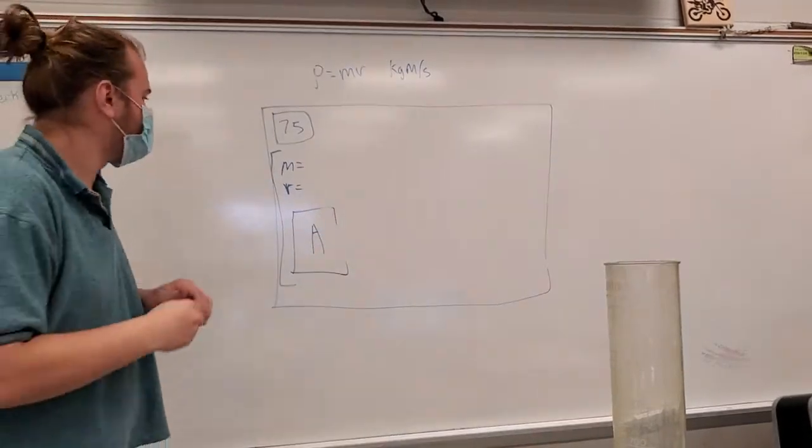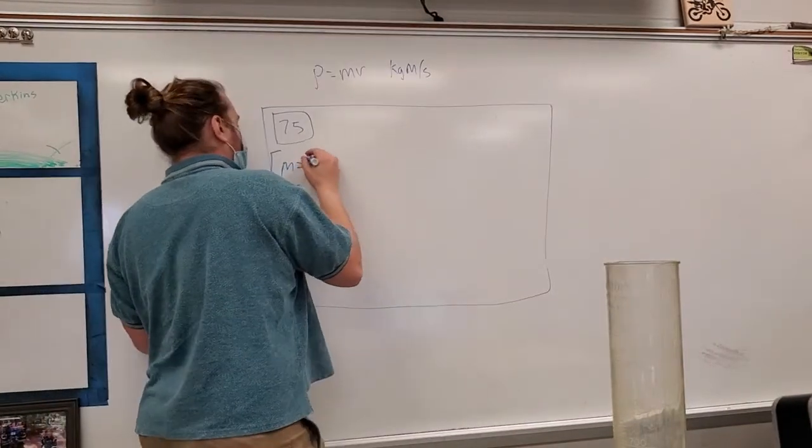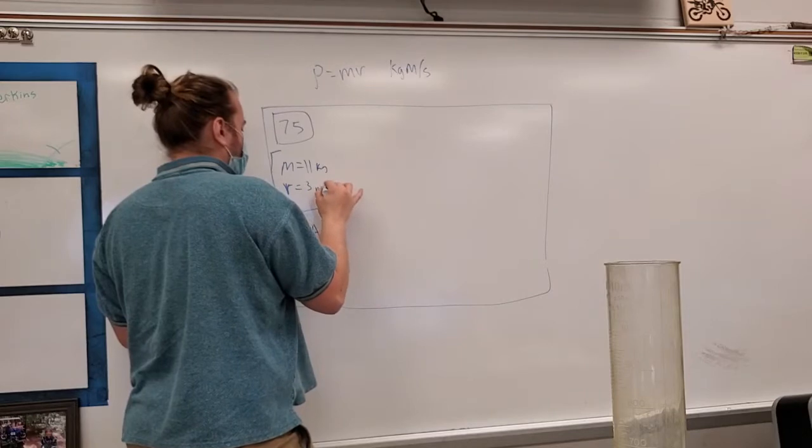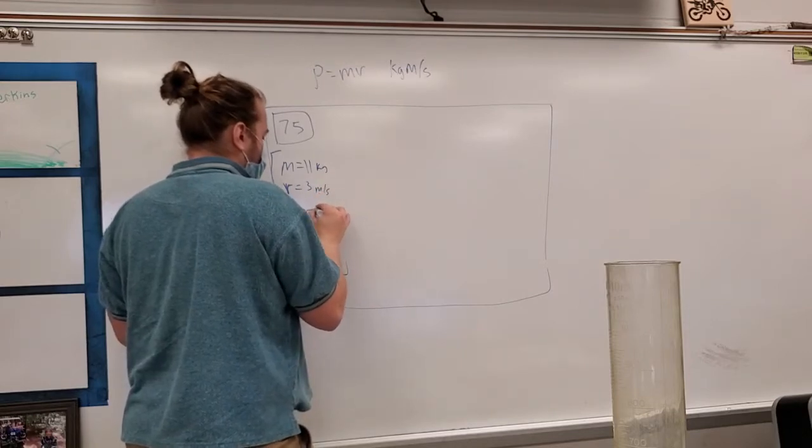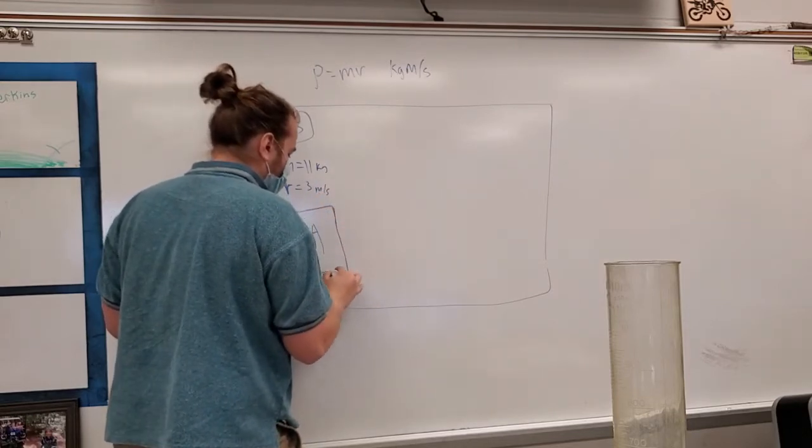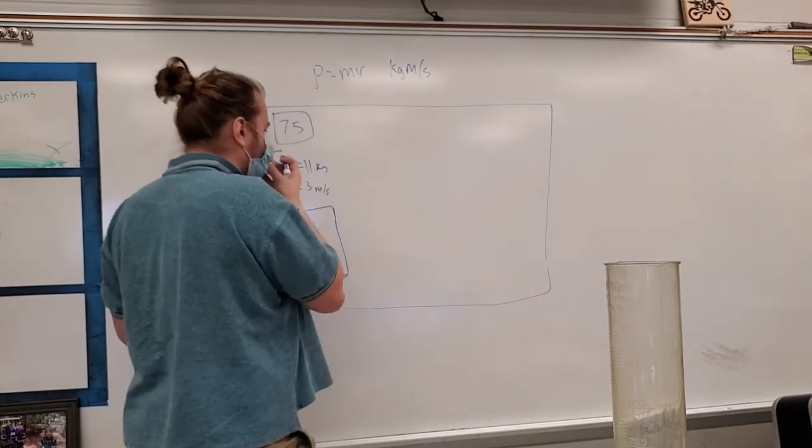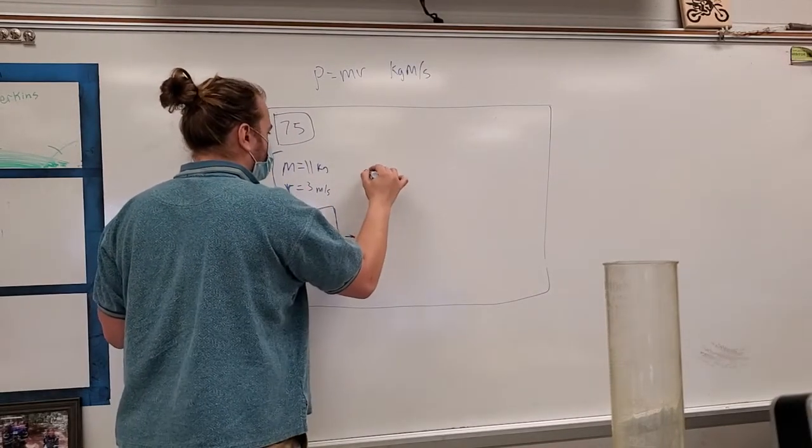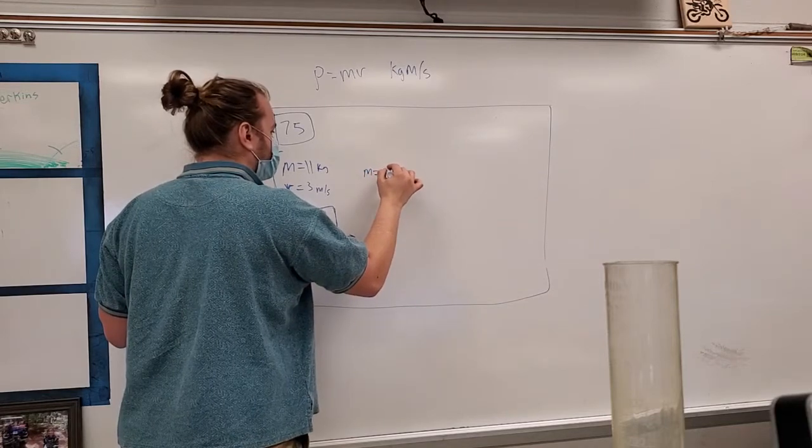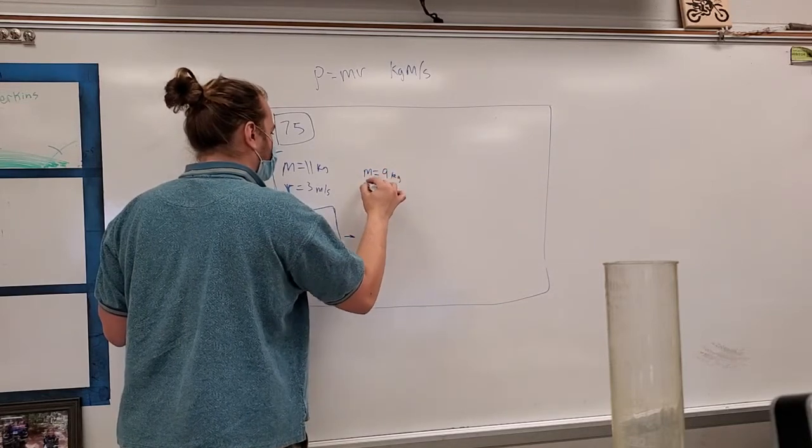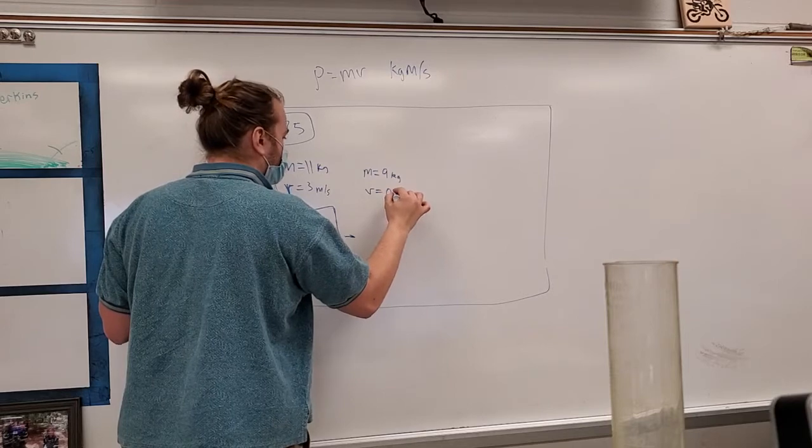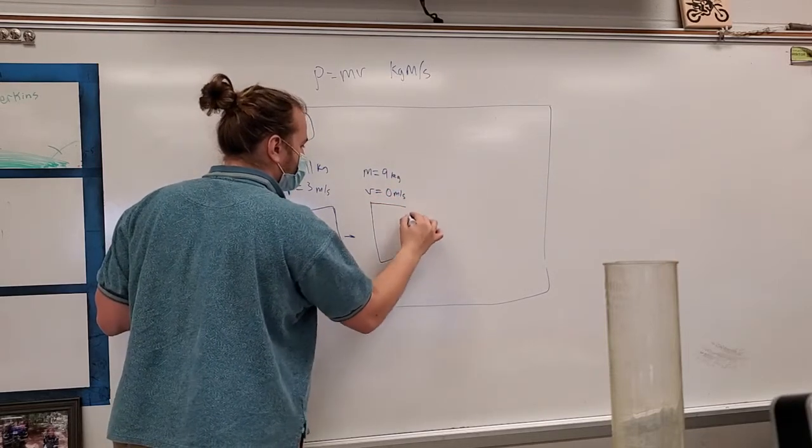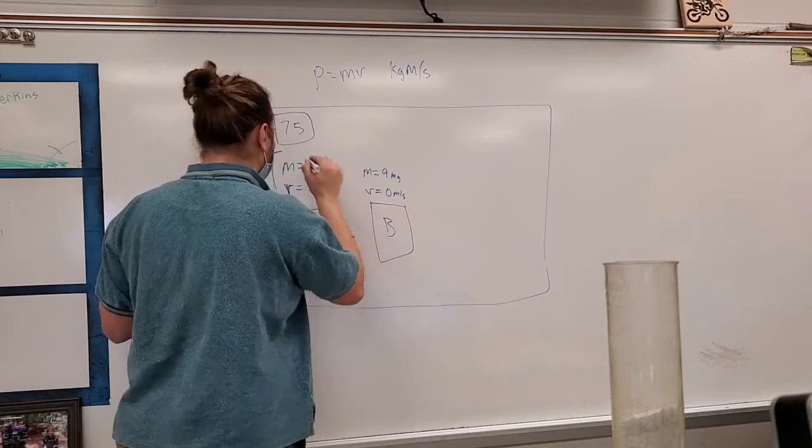Let's say mass A has a mass of 11 kilograms, and it's going at 3 meters per second. Again, let's say that mass B is equal to 9 kilograms, and it's going 0 meters per second. Here's our initial.